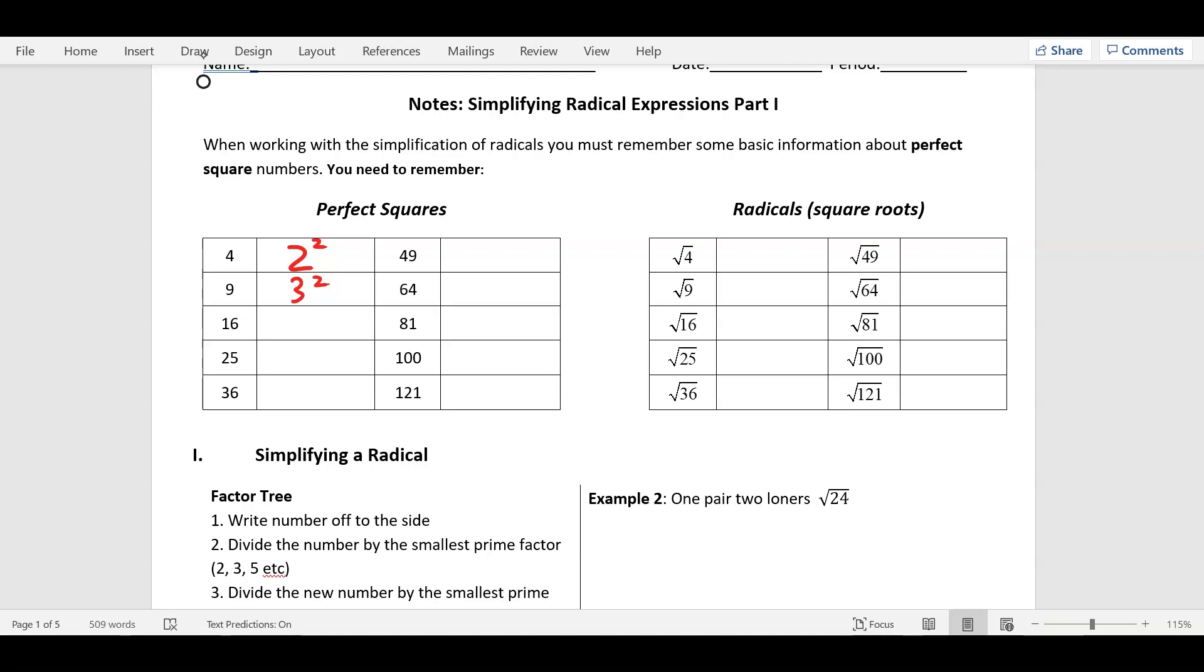You might already see a pattern. So 16 is what times what? Four times four, so four squared, right? And then we're going to go all the way down. Twenty-five is five squared, thirty-six is six squared, forty-nine is seven times seven, sixty-four is eight squared, and all the way up to 11.